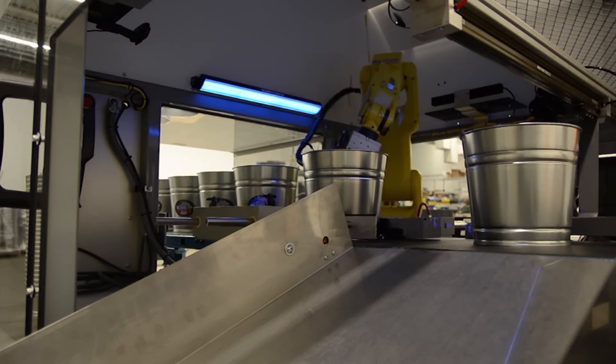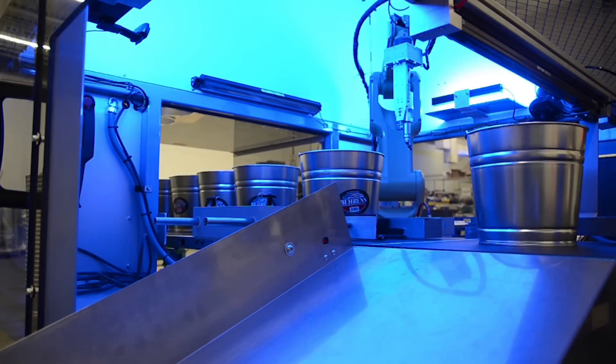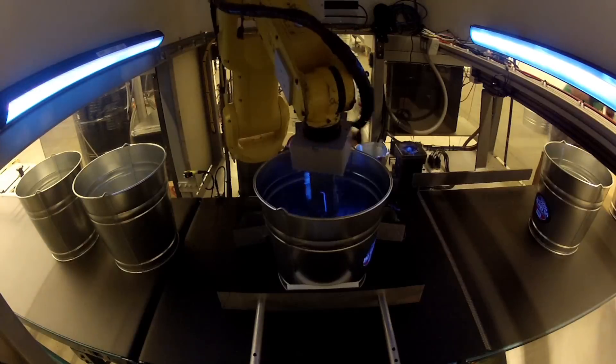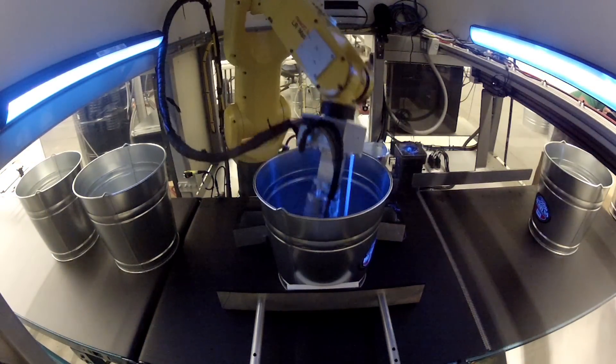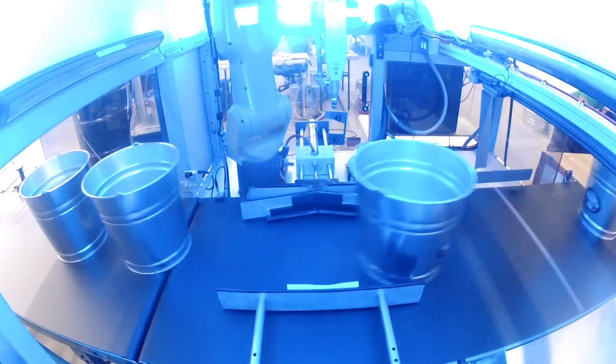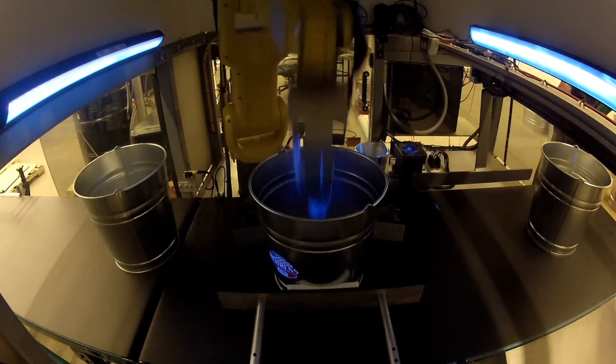Buckets are placed on an adjustable infeed conveyor and fed to the FANUC LR Mate robot. Each bucket reaches a flat belt staging conveyor in the robot adhesive dispense area where the FANUC LR Mate applies adhesive to the bucket seams.